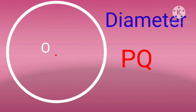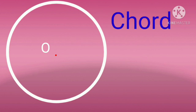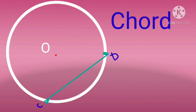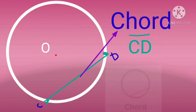The next part is chord. A line segment joining two points on a circle is called a chord. In this circle, points C and D are on the circle. When we join points C and D, this line segment is called a chord.